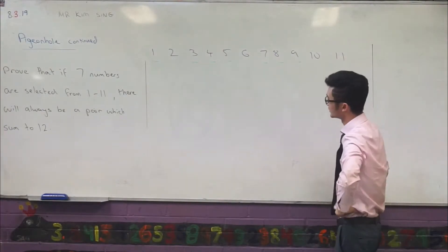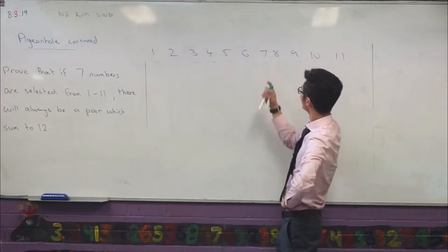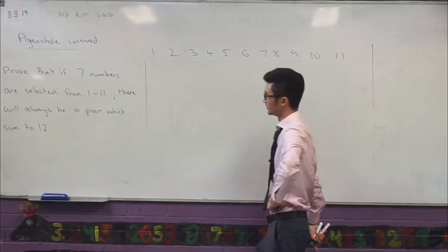Is there a pair of numbers here which sum exactly to 12? Yep, I can see it: 5 and 7. In fact, we have 2. We have 4 and 8 as well. But this is saying that there will always be a pair which sums to 12. Let's try another just random kind of allocation.